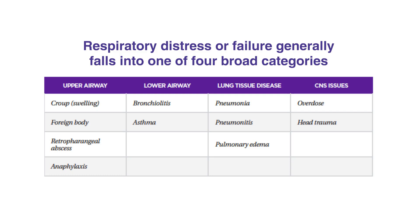In the upper airway, distress or failure can be caused by croup or swelling, foreign body, retropharyngeal abscess, and/or anaphylaxis.